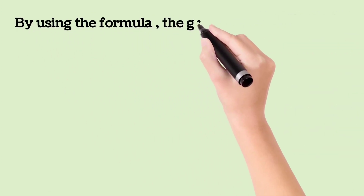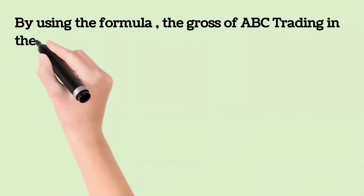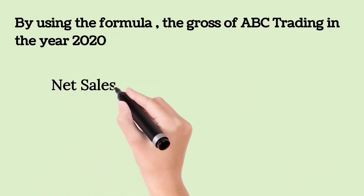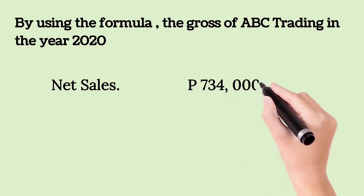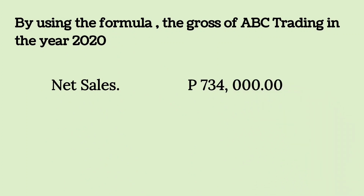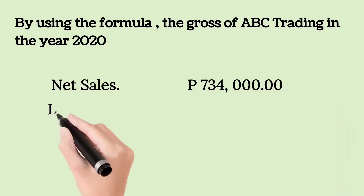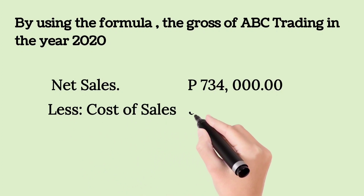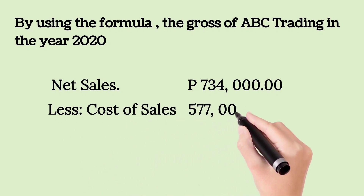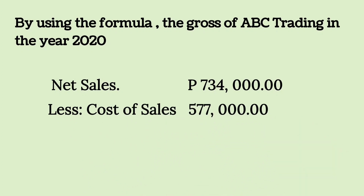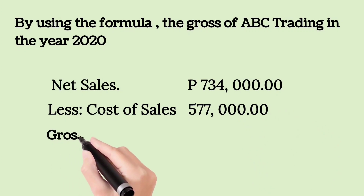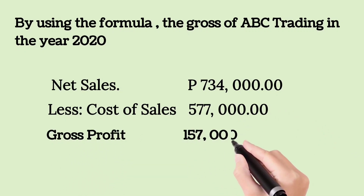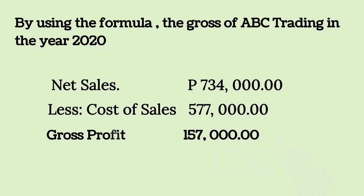By using the formula, the gross profit of ABC Trading in the year 2020 is: net sales equals $734,000, less cost of sales $577,000, equals gross profit $157,000.